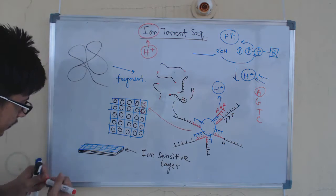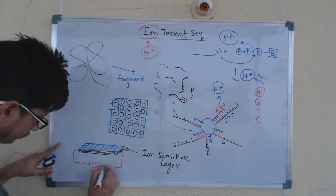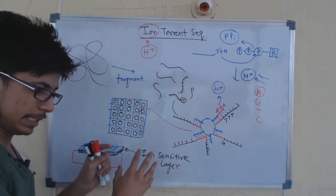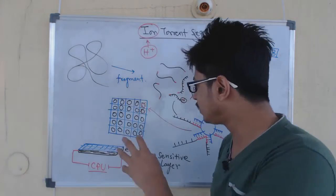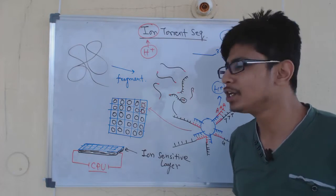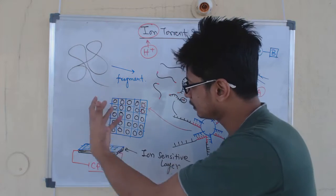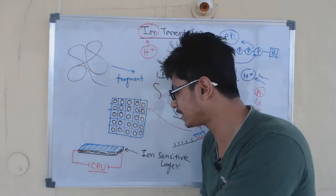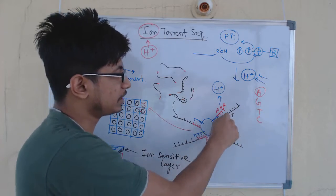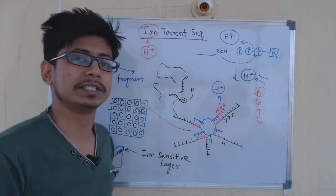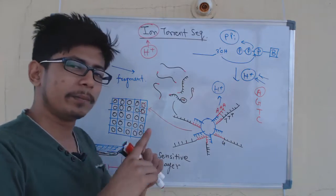The ion-sensitive layer is connected to the CPU — the processing unit — which collects all the data. Essentially, the chip functions as millions of pH meters combined together. Whenever base recognition occurs, the base call is recorded and sent to the CPU. If three A's are attached, the CPU records three T's in the actual strand. By this way, we get the sequence data from each fragment, and the CPU runs complex algorithms to align them and reconstruct the full genome sequence.